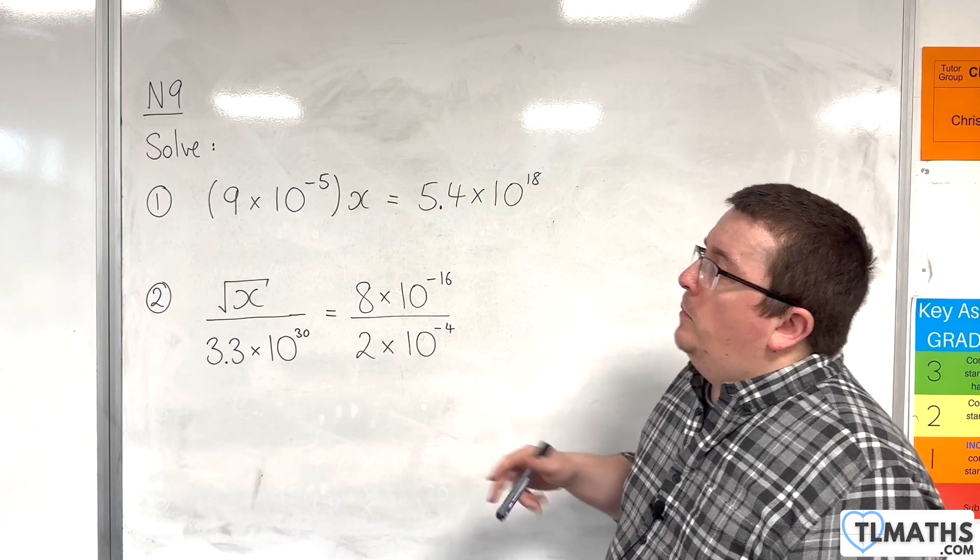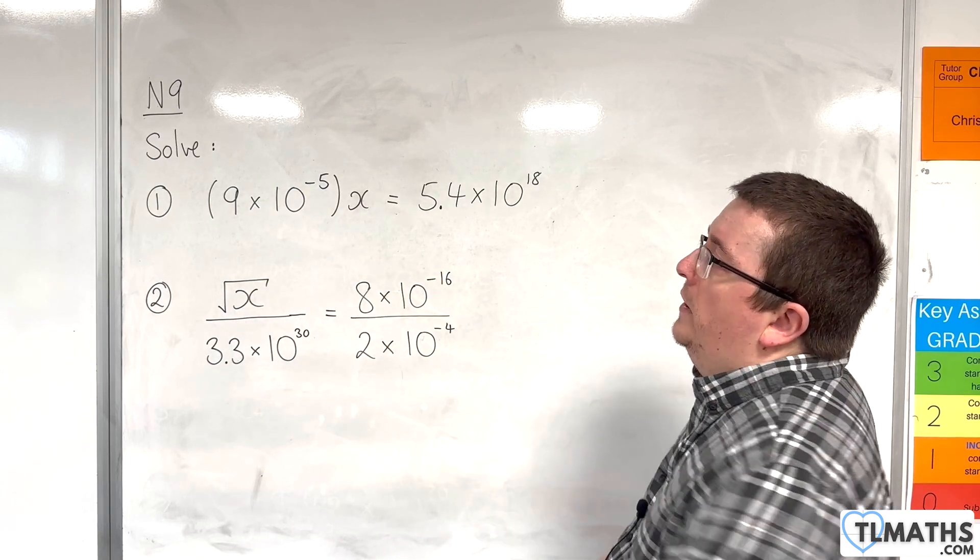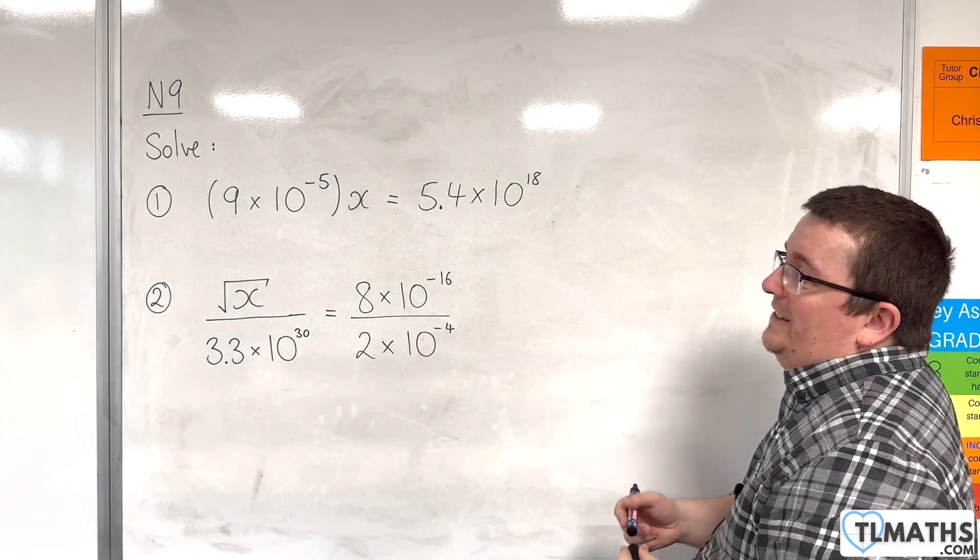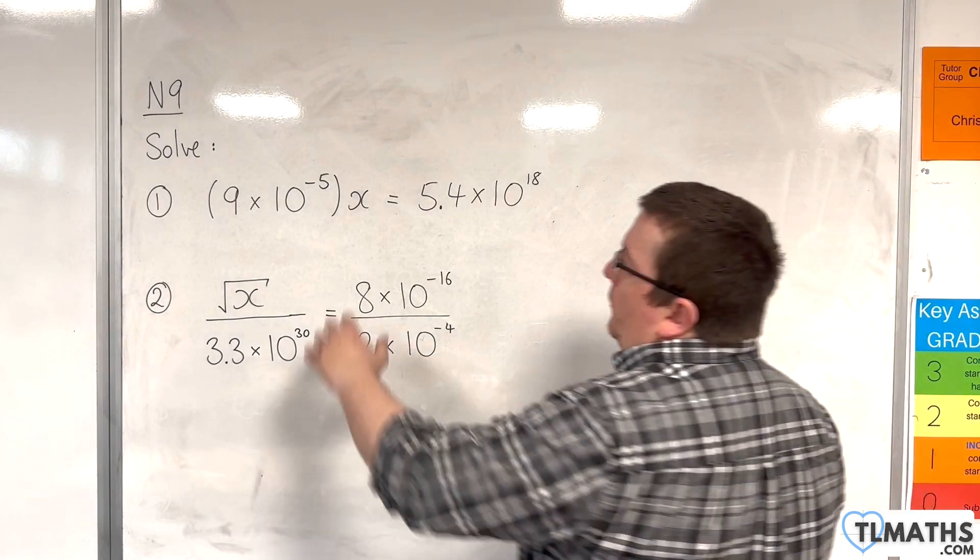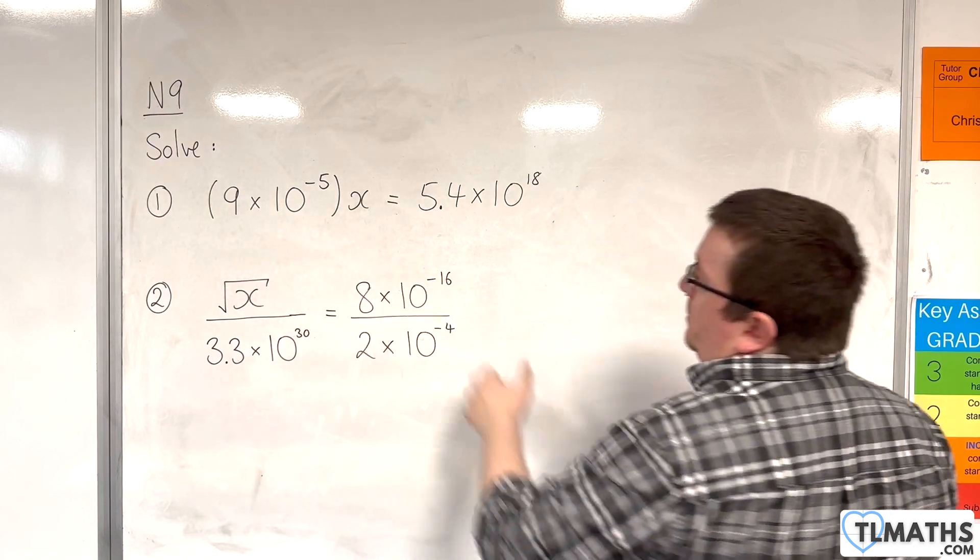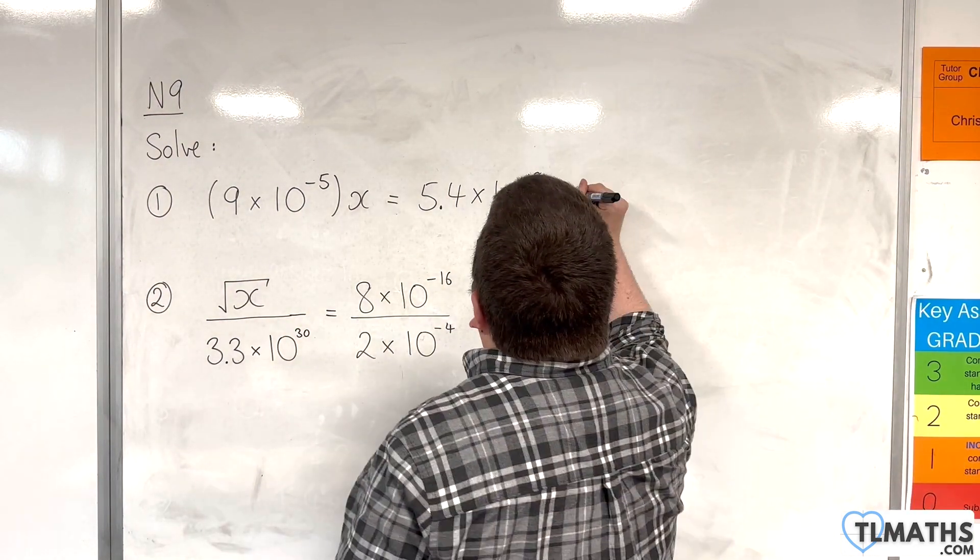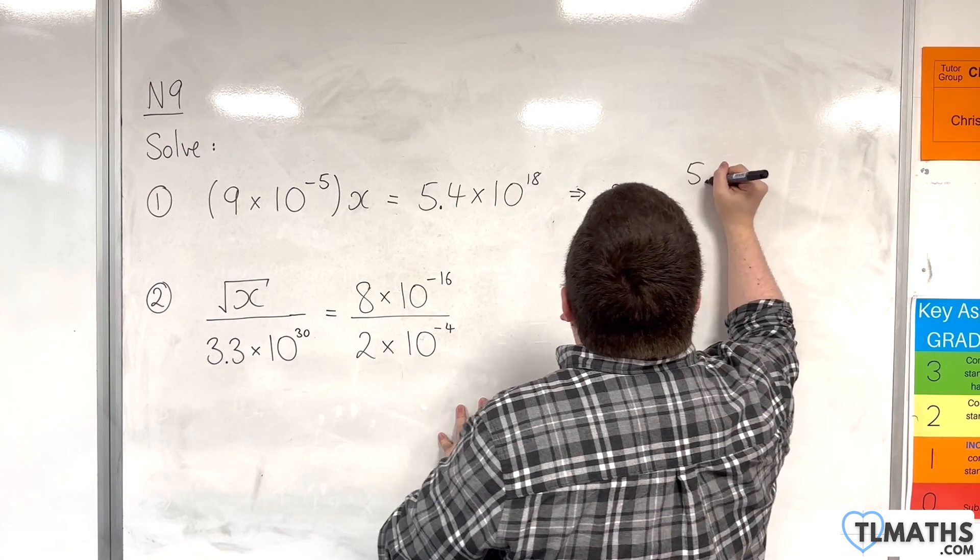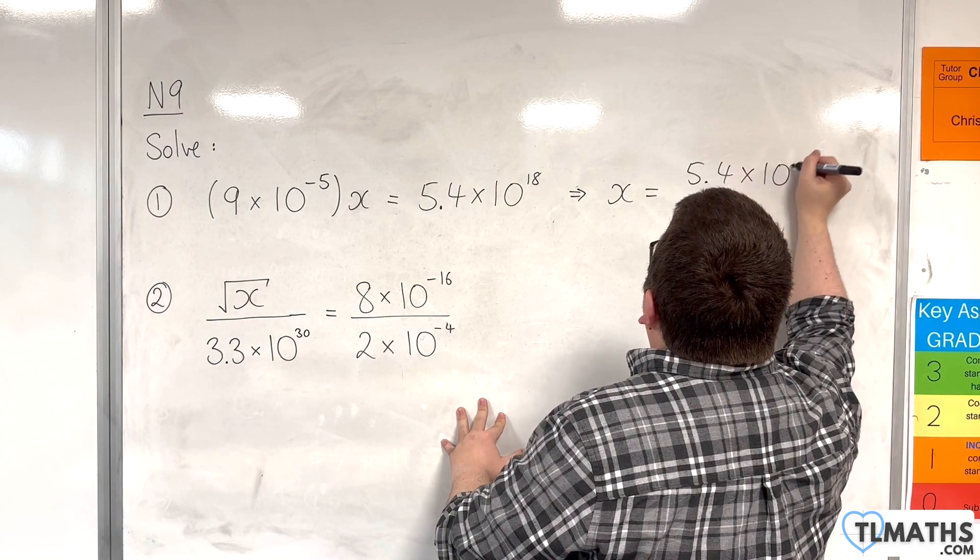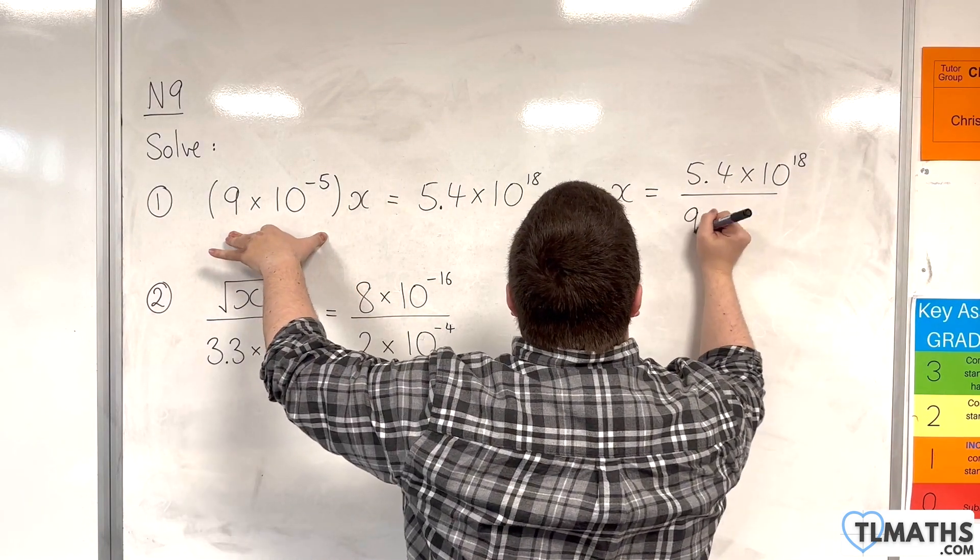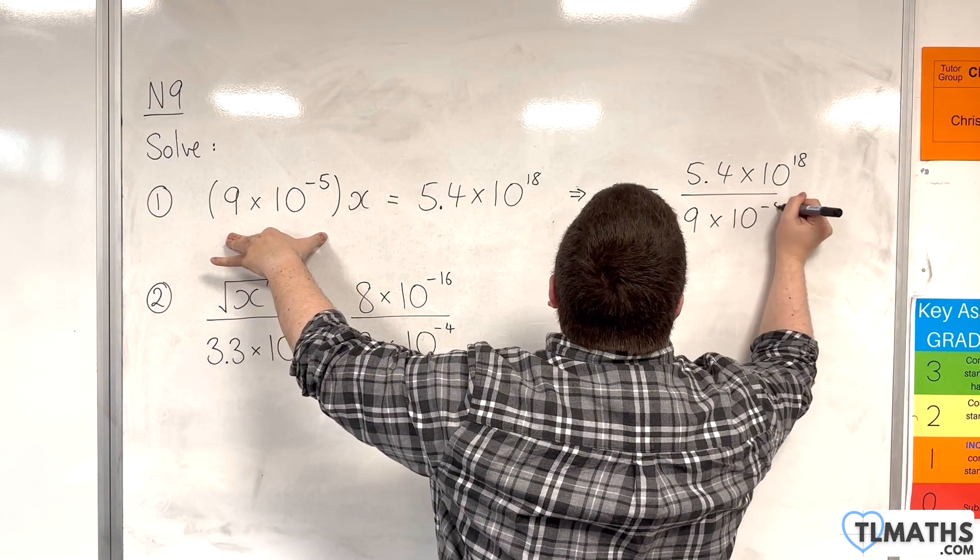So, first one, we have 9 times 10 to the minus 5 times x is equal to 5.4 times 10 to the 18. So, in order to isolate the x, I need to divide both sides by the 9 times 10 to the minus 5. So, x will be equal to 5.4 times 10 to the 18, and I'm dividing both sides by this bracket, so 9 times 10 to the minus 5.